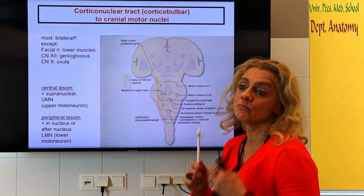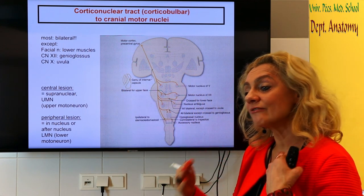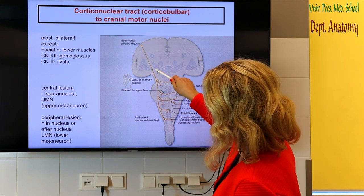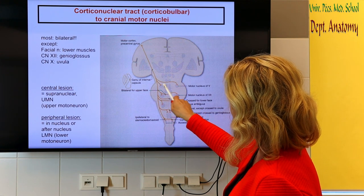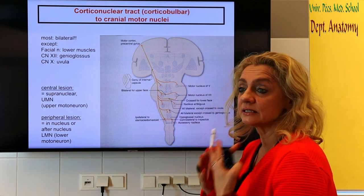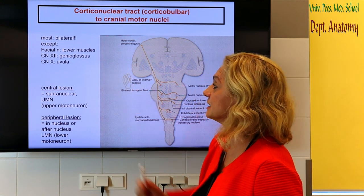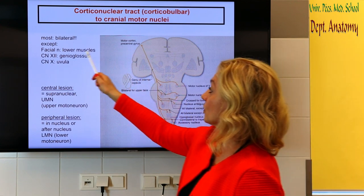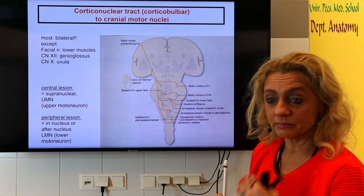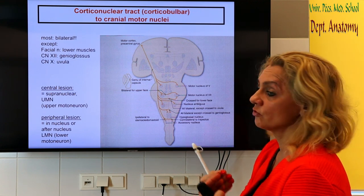Most motor nuclei have bilateral innervation. Evolutionarily, the face is over-secured to ensure it gets innervation. The descending pathway gives innervation to both sides, which is very important clinically: if one side is lesioned, the muscle is still going to be intact because it receives innervation from the other side too. The exceptions you have to know are: the lower muscles innervated by the facial nerve, the genioglossus muscle innervated by the hypoglossal nerve, and the uvular muscle innervated by the vagus — these receive innervation only from the contralateral side.